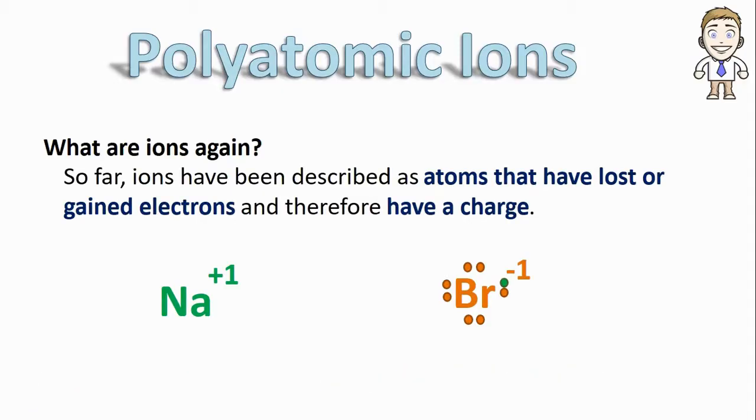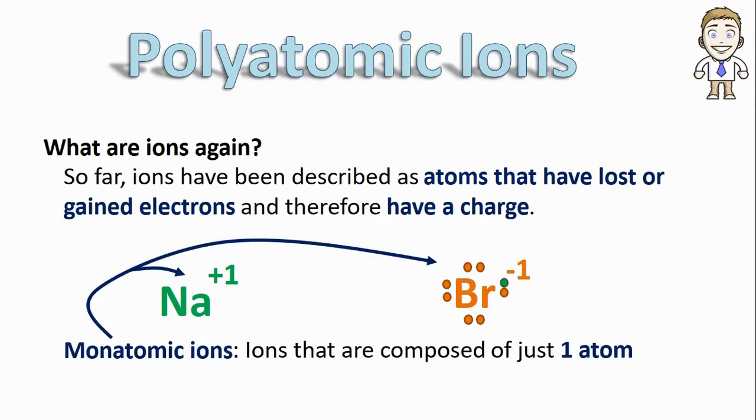What we've left out of this description is that these ions are really just one type of ion called a monatomic ion, which means that they're composed of just one atom. This prefix mono is always going to tell you that there's one of something. In this case, for these ions, they're each made of only one atom.